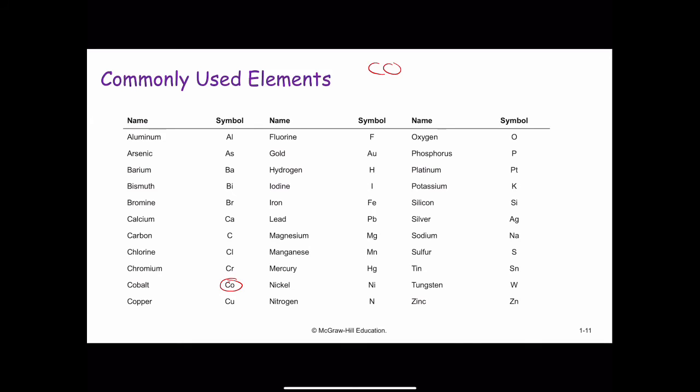The symbols of some elements are derived from their Latin names. For example, Au for gold comes from the Latin word aurum. Iron has the symbol Fe, which comes from the Latin word ferrum for iron. And sodium has the symbol Na, which comes from natrium, which means sodium. Whereas most of the other ones come from English names.